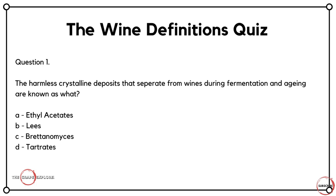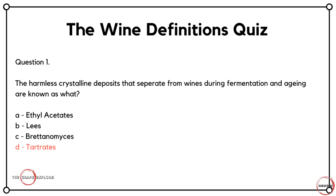Question one: The harmless crystalline deposits that separate from wines during fermentation and ageing are known as what? Is it A, ethyl acetate? Is it B, lees? Is it C, Brettanomyces? Or is it D, tartrates? This quiz is all about the words, the definitions, the technical terms that we use in winemaking. For those of you who started out with answer D, tartrates — you're off to a good start.